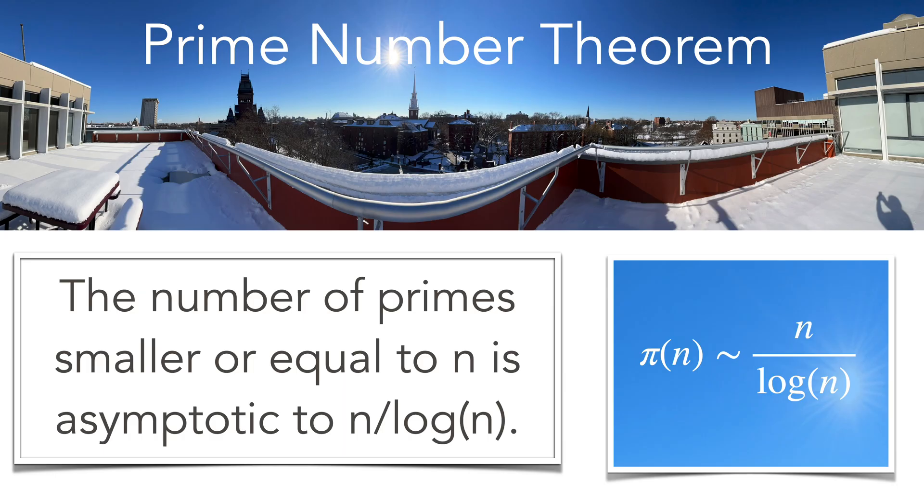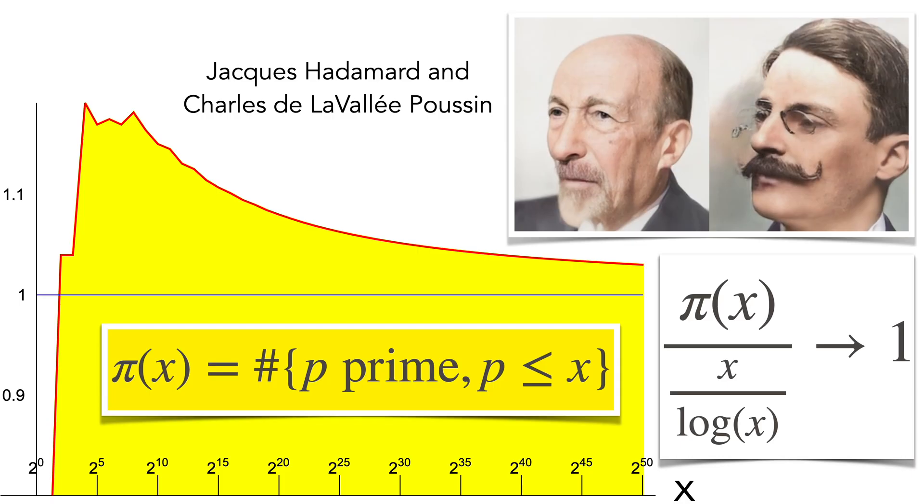The prime number theorem is a deeper theorem giving the asymptotics of the number of primes. It tells that the number of primes smaller or equal to n grows like n over log n. So here we see the graph of that function pi of x, we see that it's kind of approaching more and more 1.